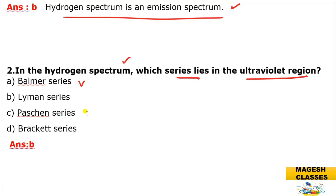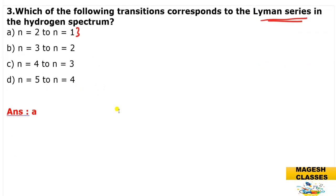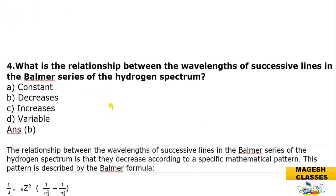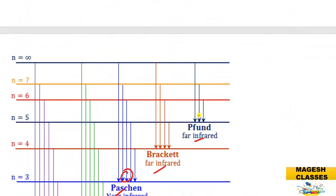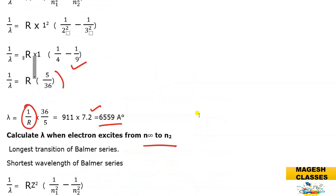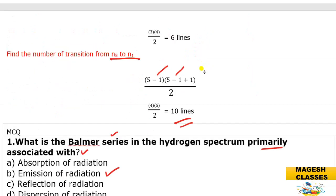Third MCQ: Which of the following transitions corresponds to the Lyman series? The Lyman series corresponds to transitions n=2 to n=1, n=3 to n=1, etc. — the final state is always n=1. Fourth MCQ: What is the relationship between the wavelength of successive lines in the Balmer series? The first line of the Lyman series is 1216 Å decreasing to 911 Å at the series limit. In any series, wavelength decreases from first to last line.